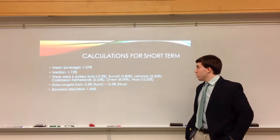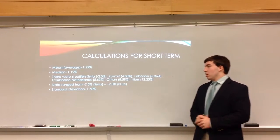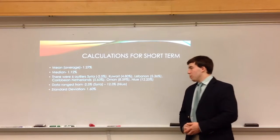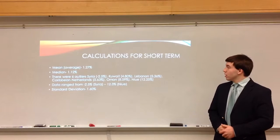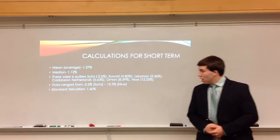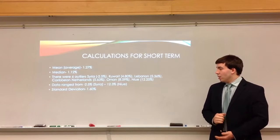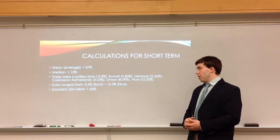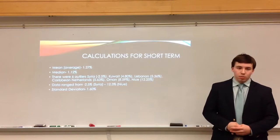My calculations for the short term: the mean was 1.27% and the median was 1.2%. There were also six outliers in the short term: Syria, Kuwait, Lebanon, Caribbean, Netherlands, Oman, and Niue. The data ranged from negative 2.5% to 12.3%, so a lot more spread out than before. The standard deviation was 1.60%.